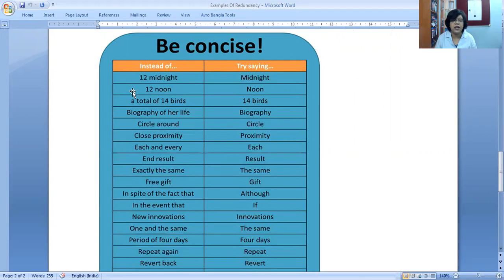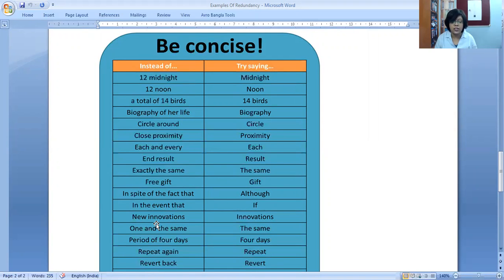Here I have added a chart form. Instead of saying this, try saying this. Instead of saying 12 midnight, just say midnight. Instead of saying 12 noon, just say noon. Instead of saying a total of 14 birds, say 14 birds. Biography of a life - biography is someone's life. Circling around - just circle. In the event that means if, so just use if instead of using such a long phrase.